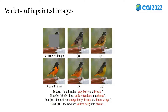We also evaluated various textual descriptions to manipulate a variety of inpainted images. This figure shows some inpainted images corresponding to different textual descriptions. First, LSAI inpaints a consistent image with the original one given text describing the original image, as shown in example C. Second, LSAI generates various natural images given arbitrary descriptions.